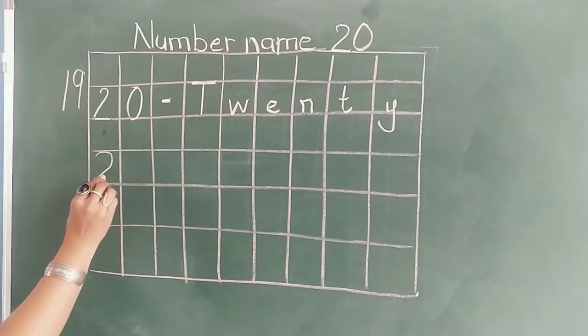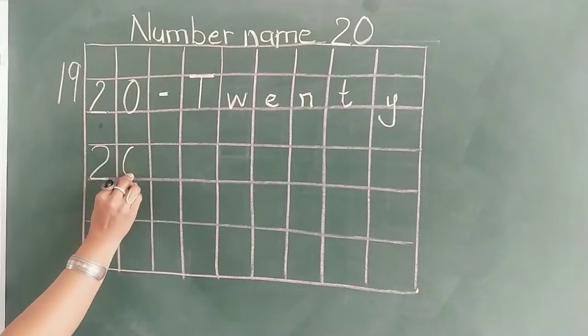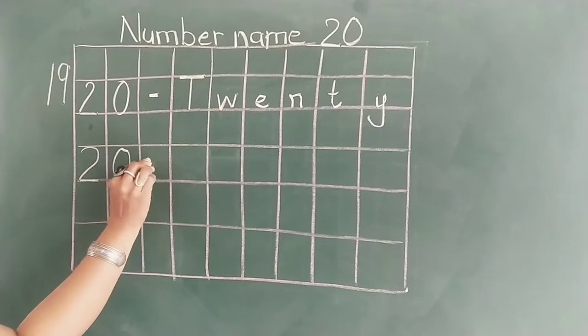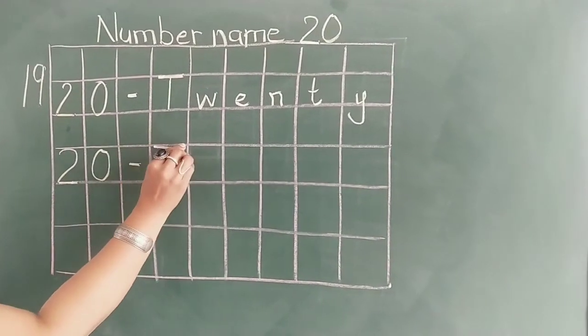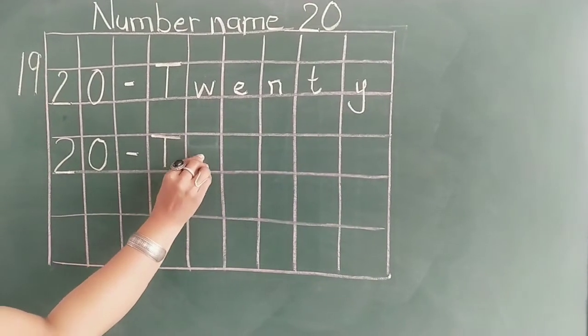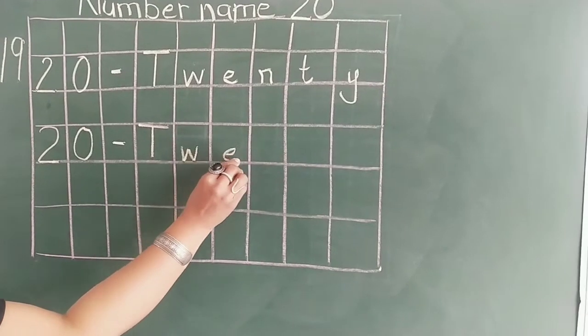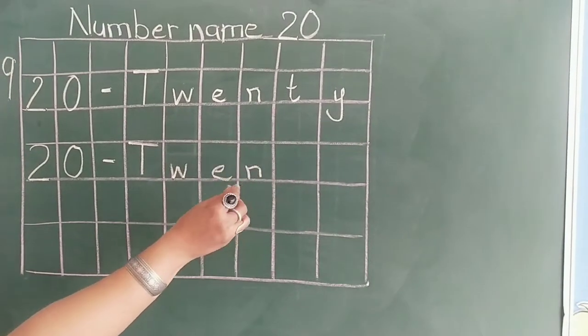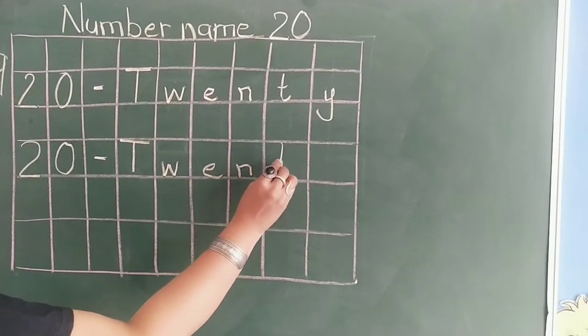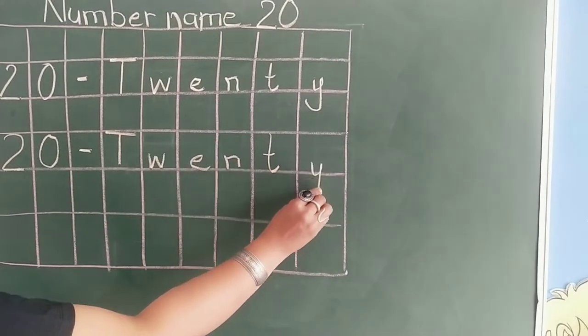Again, leave one line and write down number 20, 0, 20. Small dash. T, W, E, N, T, Y, 20.